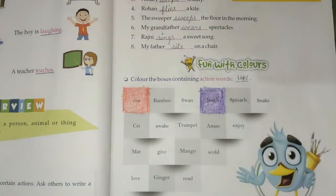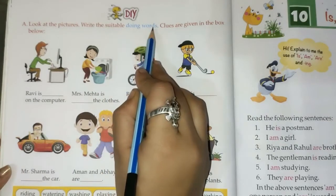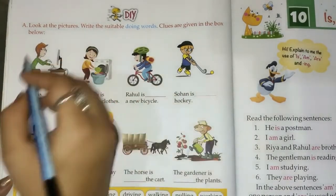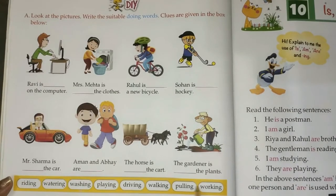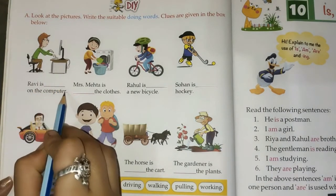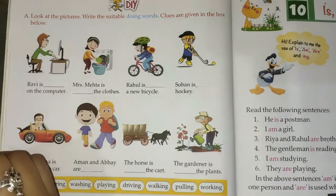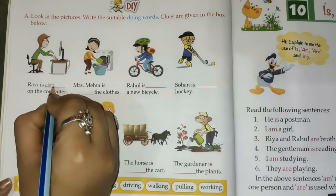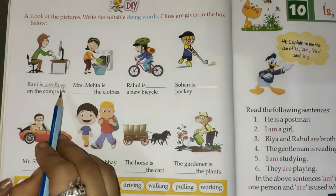Now turn the page. Open page number 52. Look at the pictures. Write the suitable doing words — clues are given in the box below. With the help of the picture, we have to complete the sentences. So first picture: Ravi is dash on the computer. What is Ravi doing on the computer? He is working. So here we will write working. W-O-R-K-I-N-G. Ravi is working on the computer.